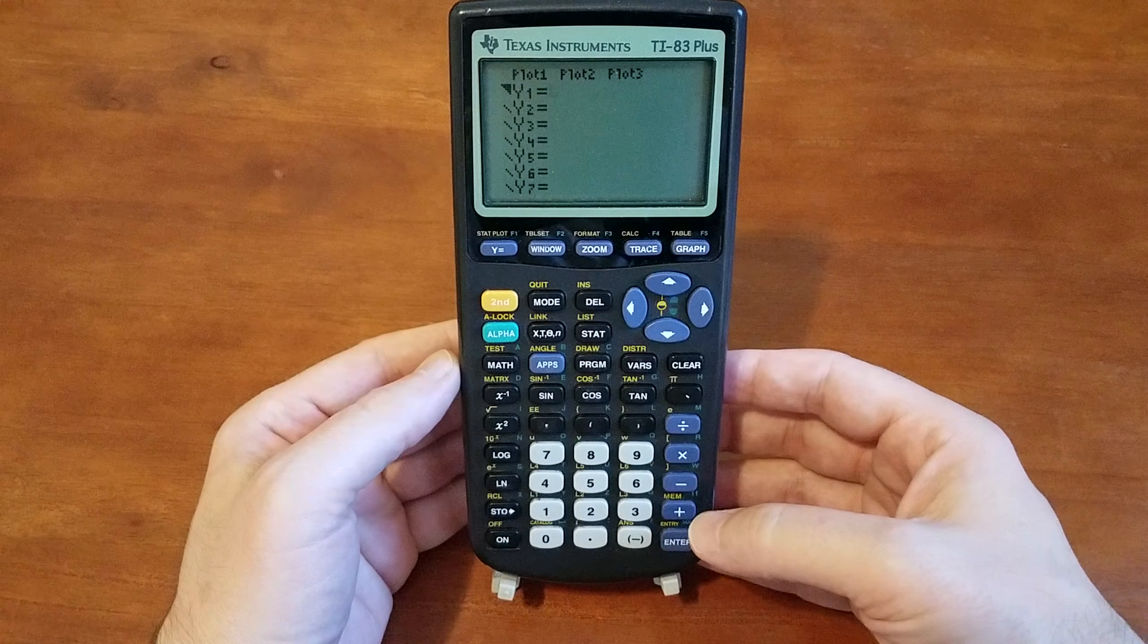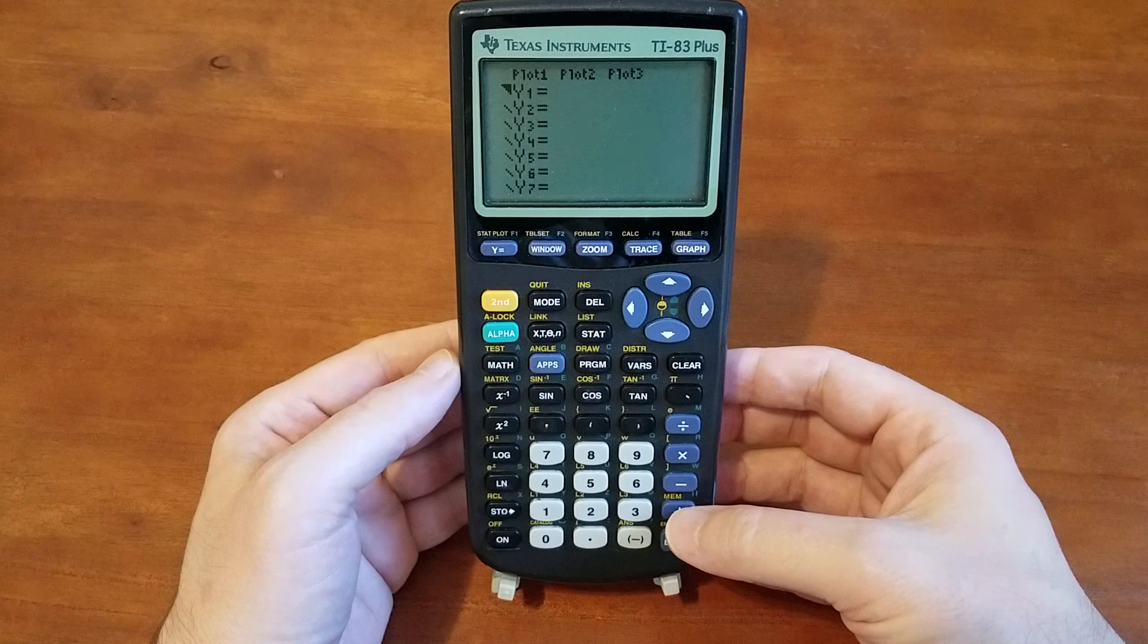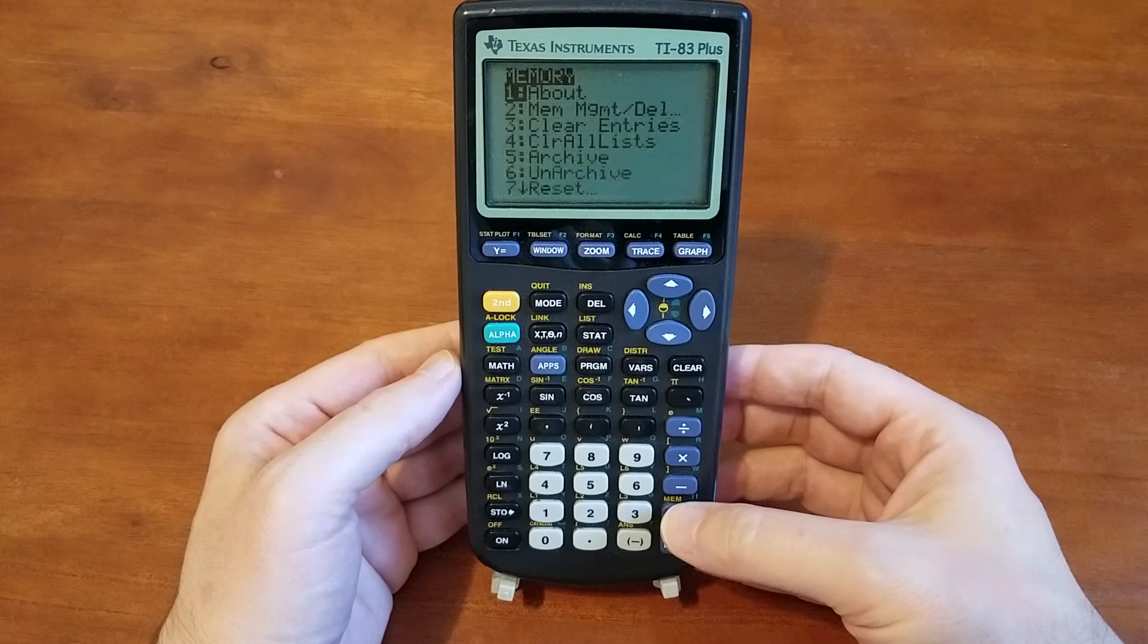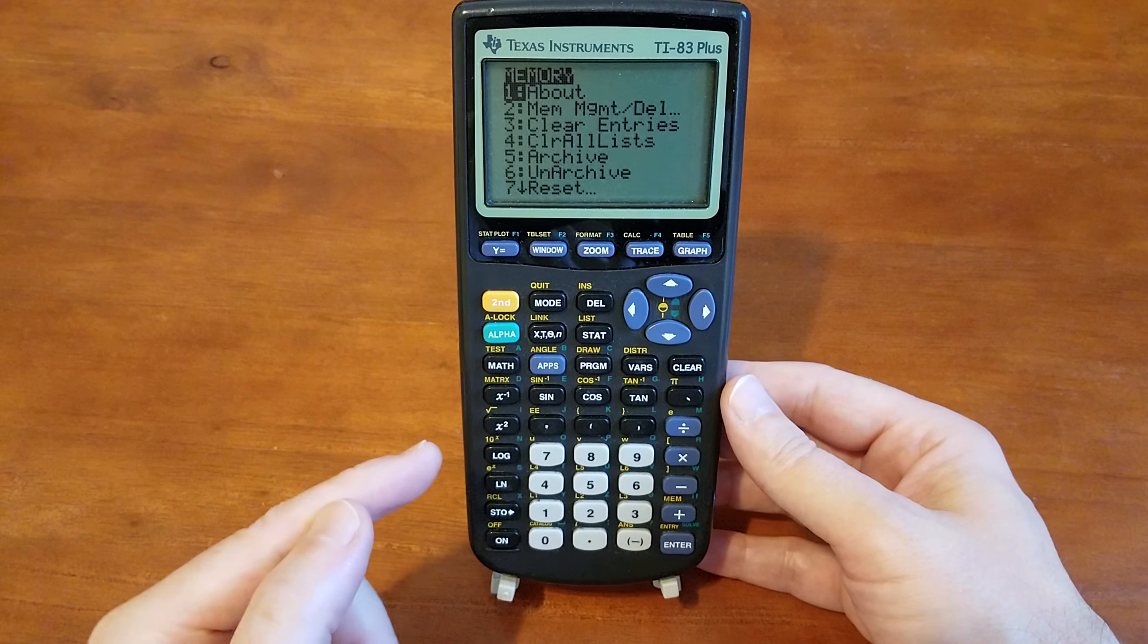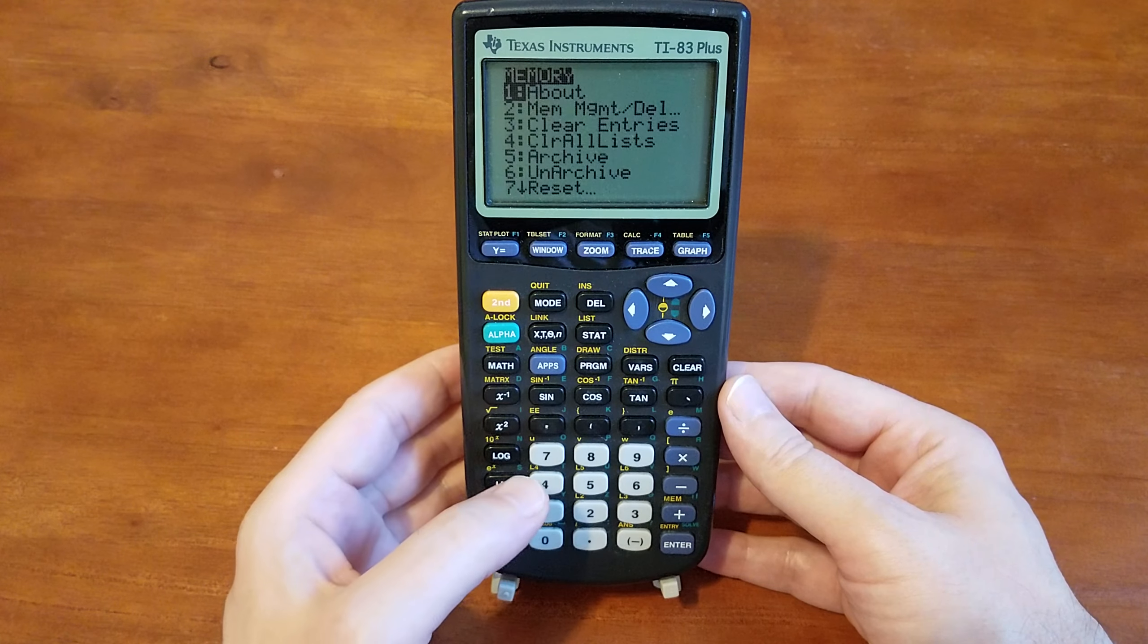Next thing you want to do is come down and tap the plus button right there. Then you want to tap the number 7 button.